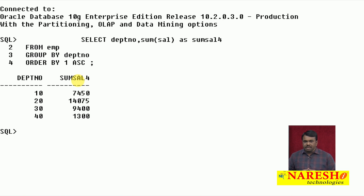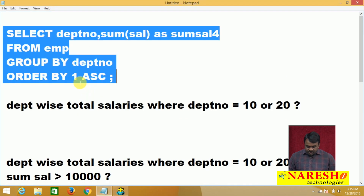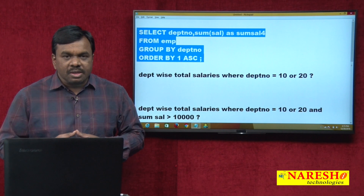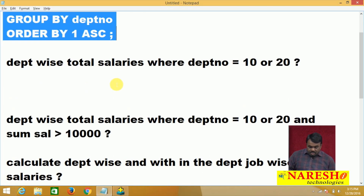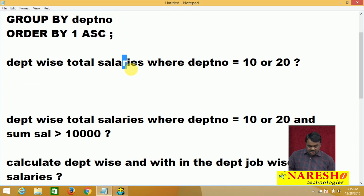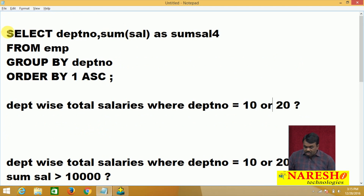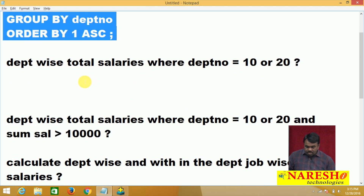This is a simple GROUP BY query, but suppose the user is not interested in all the departments. The user is interested in only specific departments - he does not want the total salary from all departments. For example, he wants to calculate the total salaries of only departments 10 and 20. The previous query returns all departments' total salaries, but the user is interested in only 10 and 20.